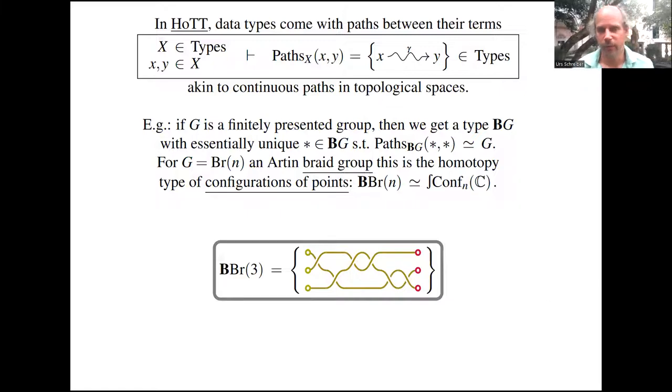For topological quantum computation, we need the special case where that finitely presented group is the Artin braid group, which is equivalently the fundamental group of the configuration space of points in the plane. For instance, the braid group on three elements has as group elements such pictures where these three input points you think of as distinct points in the plane that are now moved around while remaining distinct along continuous curves.